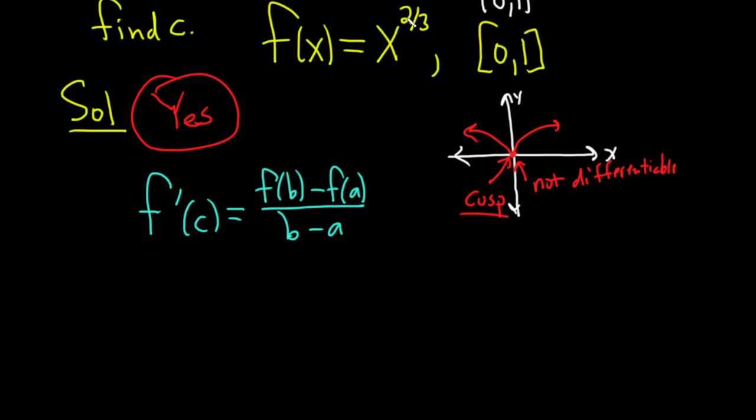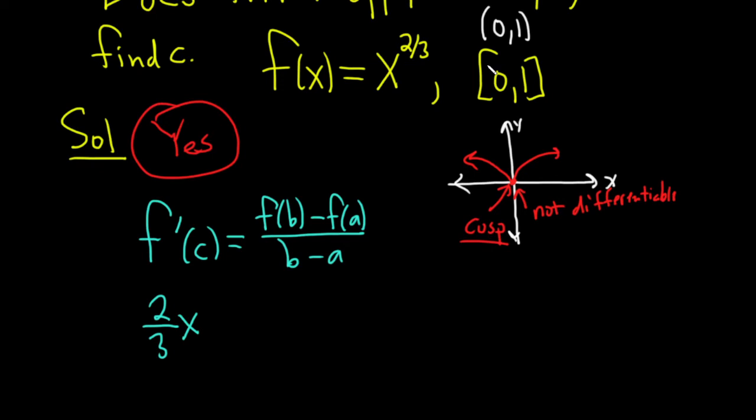The derivative is pretty easy. You just basically bring down the two thirds and you subtract one. So two thirds minus one is really two thirds minus three thirds. So it's negative one third. Just the power rule. Bring it down and subtract one and you're good.